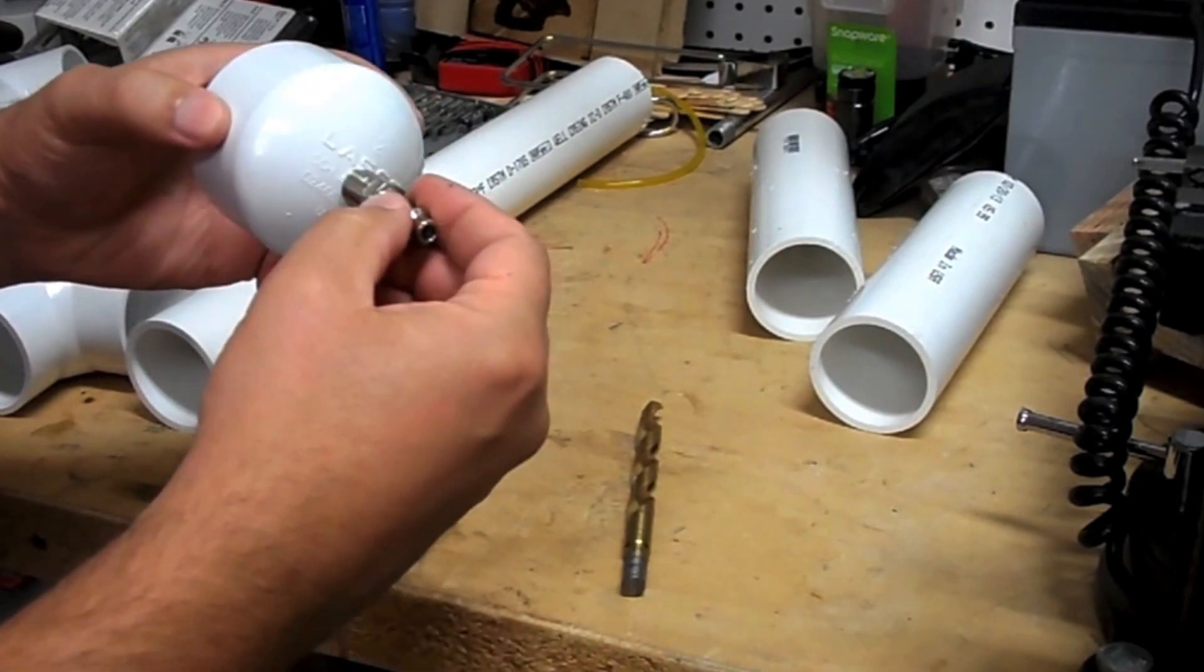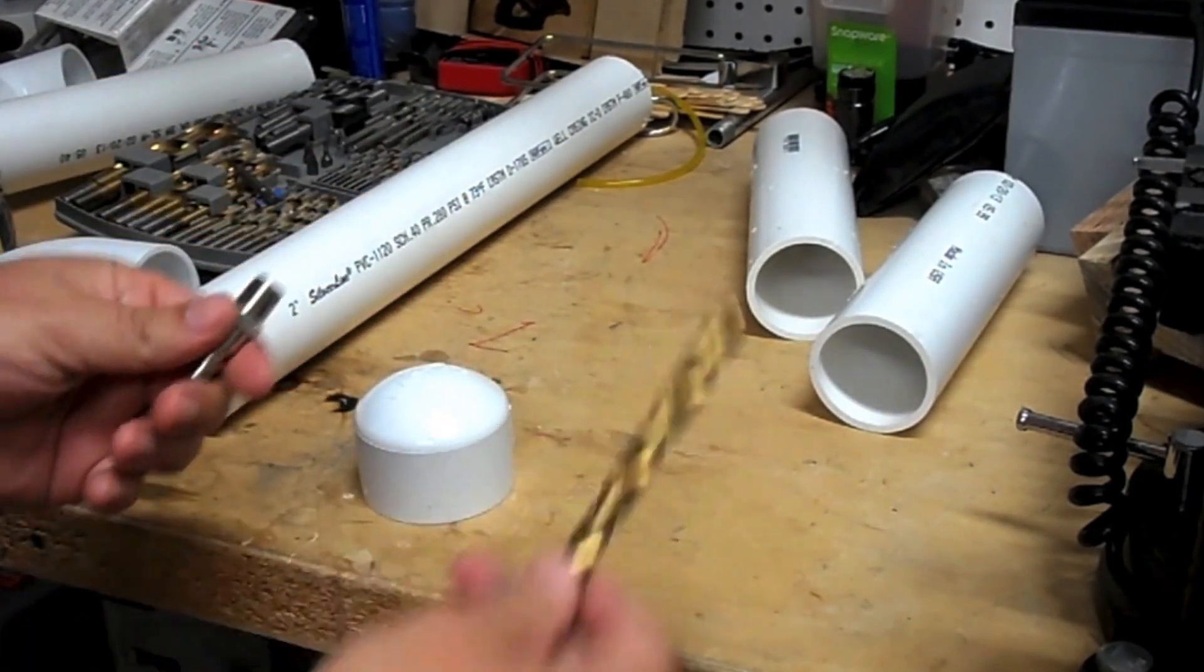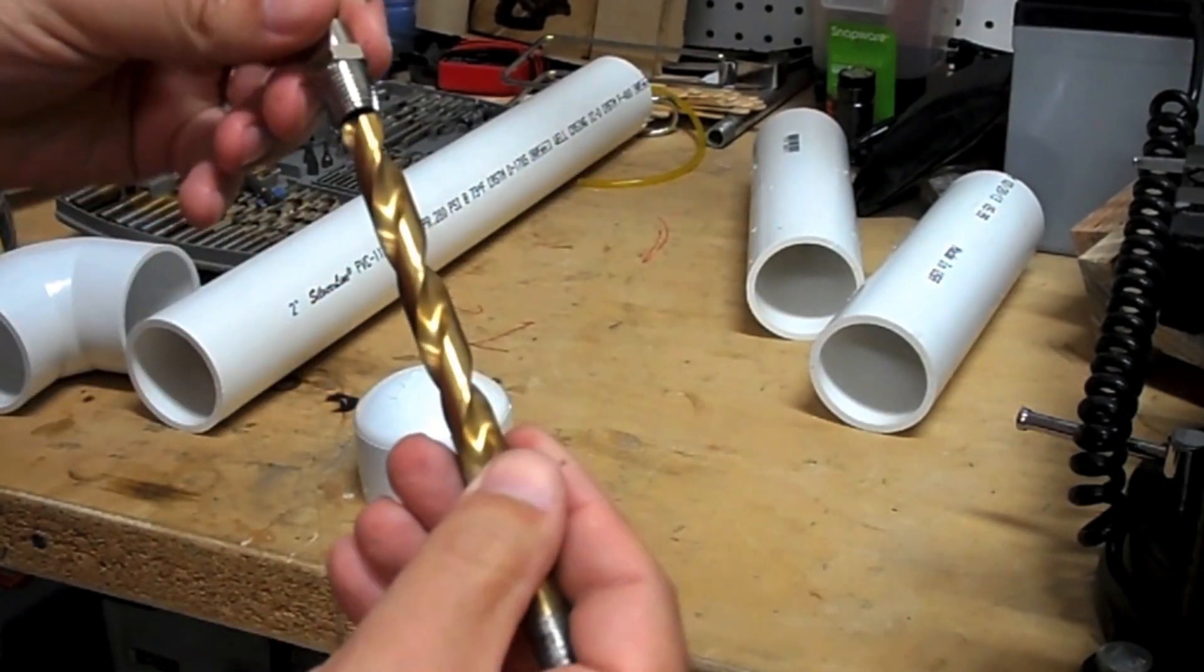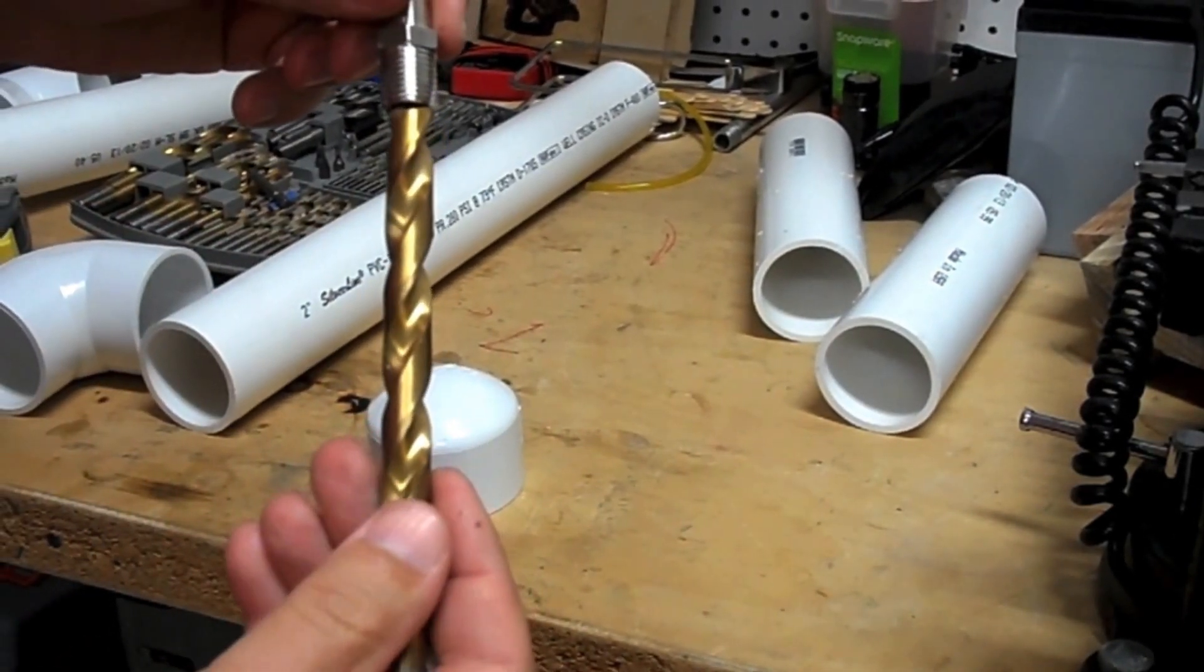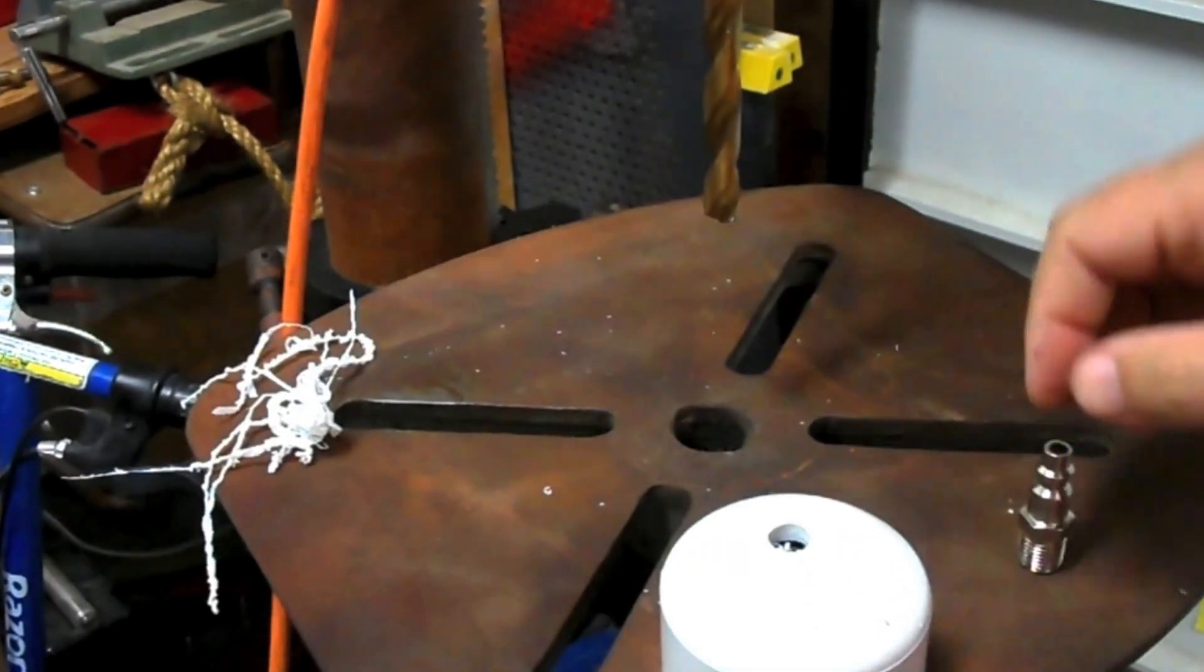Next I needed to mount this air compressor adapter in the end of this cap. I chose a drill bit smaller than the threads on the adapter. I just eyeballed the center of this cap. It was pretty close.